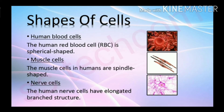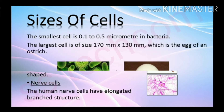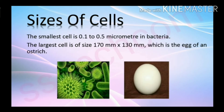Muscle cells in humans are spindle shaped. Nerve cells have an elongated, branched structure. Sizes of cells: the smallest cell is 0.1 to 0.5 micrometers in bacteria.